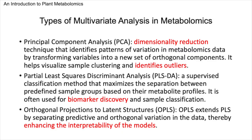Let's explore the various multivariate analysis methods frequently utilized in metabolomics. PCA is a dimensionality reduction technique that identifies patterns of variation by transforming variables into a new set of orthogonal components, helping visualize sample clustering and identify outliers. PLSDA is a supervised classification method that maximizes the separation between predefined sample groups based on their metabolite profiles, often used for biomarker discovery and sample classification. OPLS extends PLS by separating predictive and orthogonal variation in the data, thereby enhancing the interpretability of the models.